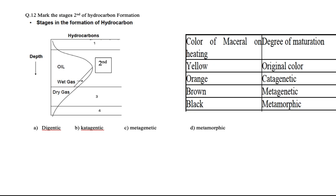Question twelve: identify the second stage of hydrocarbon formation. The stages are: first, diagenetic; second, catagenetic; third, metagenetic; and fourth, metamorphic. Each stage has a different color indicator: original yellow in diagenetic, orange in catagenetic, brown in metagenetic, and black in metamorphic. The right answer is B — catagenetic. In the catagenetic stage we have oil and wet gas; in metagenetic, dry gas forms; in metamorphic, everything is converted to inert material.